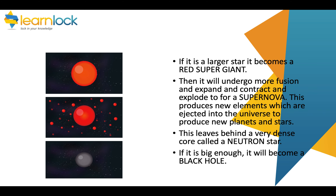If it is a larger star, it becomes a red supergiant. It will then undergo more nuclear fusion, expand and contract several times, and eventually explode to form a supernova. At this point it ejects new elements such as iron into the universe to produce new planets and stars. What is left behind is a very dense core called a neutron star, and if it is big enough, that is pulled inwards to become a black hole.